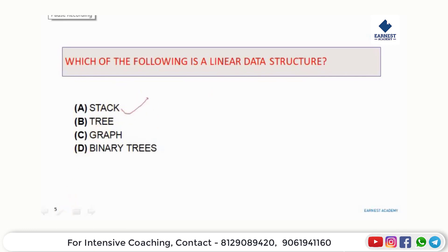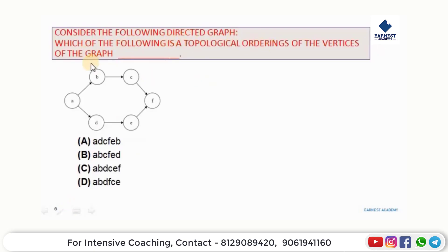Consider the following directed graph. Which of the following is a topological ordering of the vertices of the graph? In topological ordering, we remove a node with no incoming edges from the graph repeatedly.